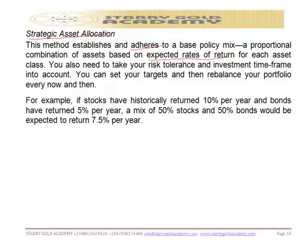You can also set your target and then rebalance your portfolio every now and then. For example, if stocks have historically returned 10% per year and bonds have returned 5% per year, a mix of 50% stocks and 50% bonds would be expected to return 7.5% per year. That is how you do your strategic allocation.